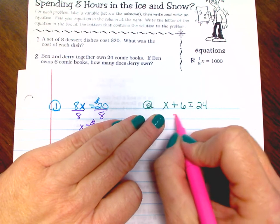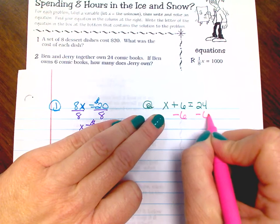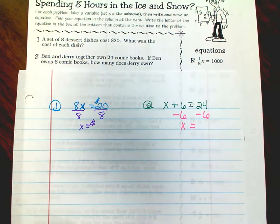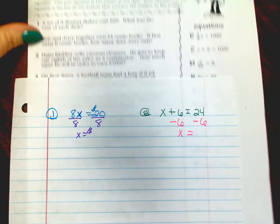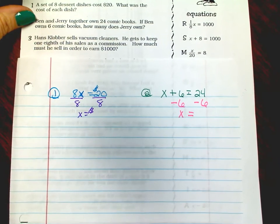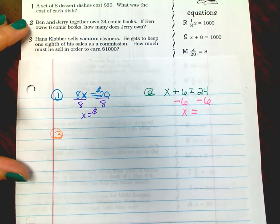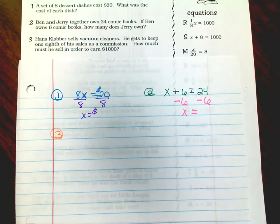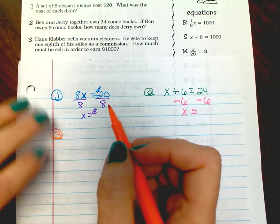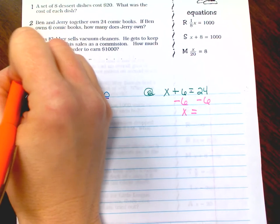Number three: Hans Culper sells vacuum cleaners. He gets to keep one-eighth of his sales as a commission. How much must he sell in order to earn $1,000? Okay, so one-eighth is written in words.